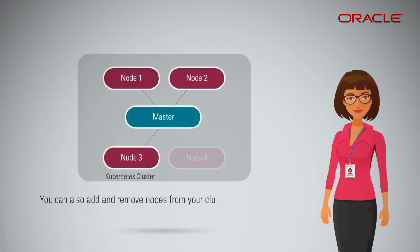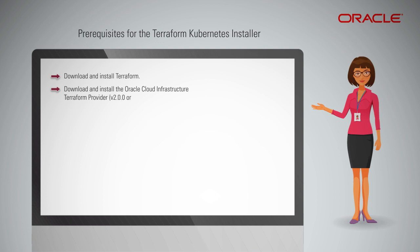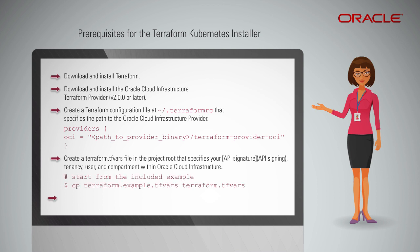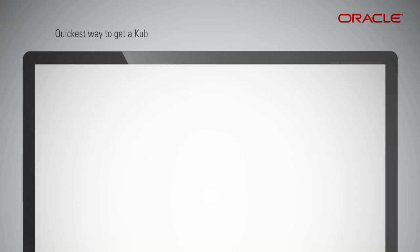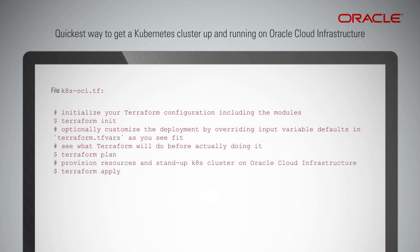If your requirements extend beyond the base configuration, the modules can be used to form your own customized configuration. You can also add and remove nodes from your cluster using Terraform. For a quick setup, follow these steps: download and install Terraform; download and install the Oracle Cloud Infrastructure Terraform provider version 2.0.0 or later; create a Terraform configuration file specifying the path to the OCI provider; create a Terraform.tfvars file specifying your API signing details, tenancy, user, and compartment within OCI; and ensure you have kubectl installed. The Kubernetes cluster will be running after the configuration is applied successfully, typically around five minutes after Terraform apply, varying depending on instance counts and shapes.